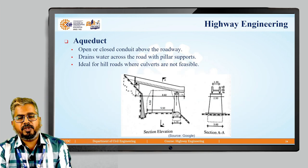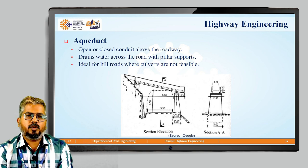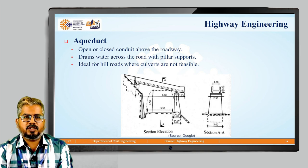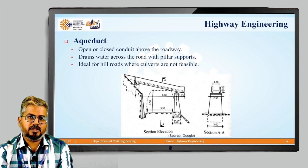Then we have the aqueduct. It is a type of open or closed conduit over the roadway that drains water across the road with pillar supports, and it is ideal for hill roads wherever culverts are not possible to be provided.